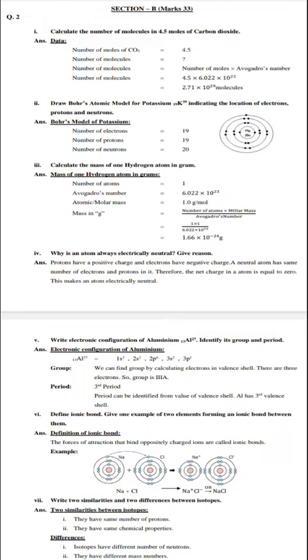First question is: calculate the number of molecules in 4.5 moles of carbon dioxide. So simply it's a numerical. We have to calculate the number of molecules. Number of moles of CO2 are given which is equal to 4.5. Number of molecules is equal to question mark. So we apply the formula.